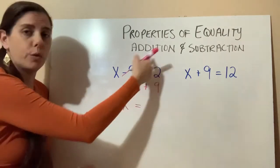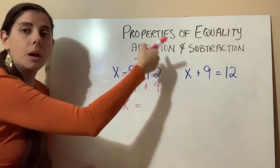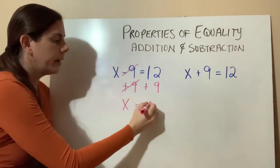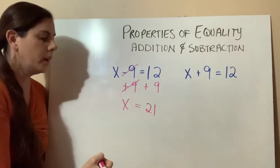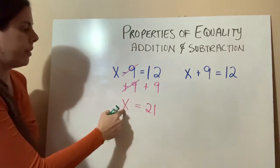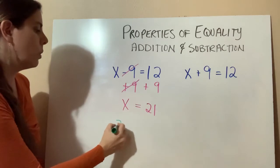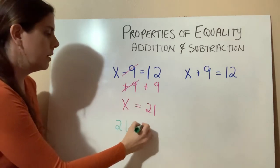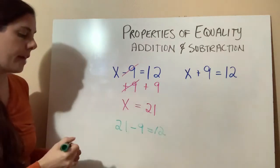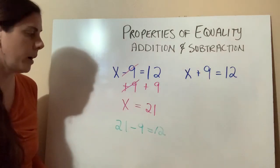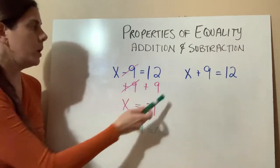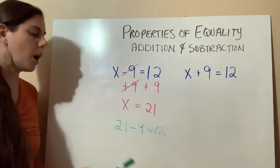Now we just need to perform that addition property of equality on the other side. 12 plus 9 equals 21. If we rewrite this equation with x equaling 21, we get 21 minus 9 equals 12, which is a true mathematical statement. So x equals 21, and we used the addition property of equality.